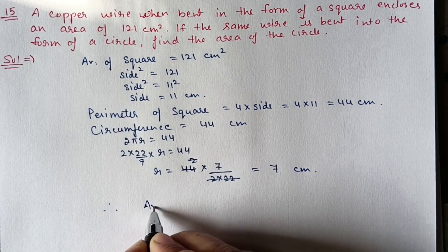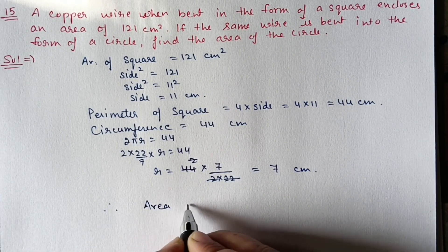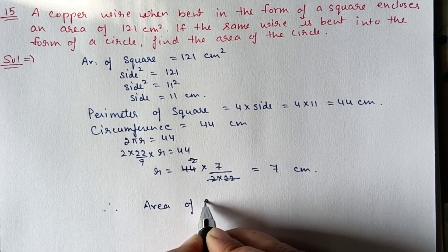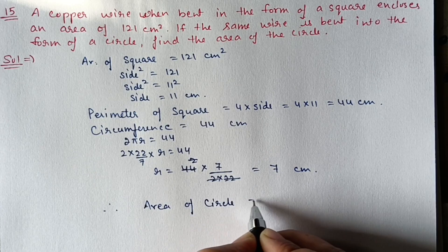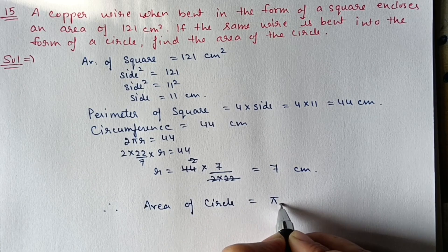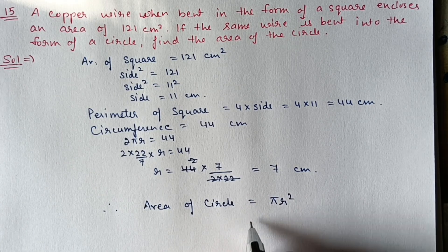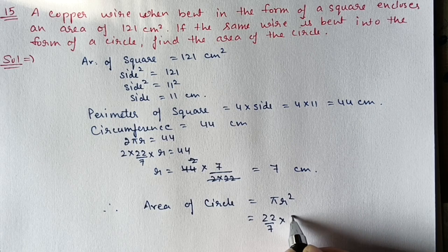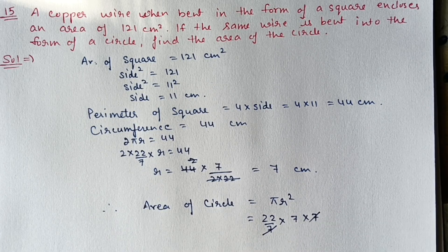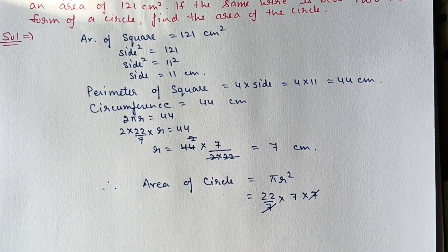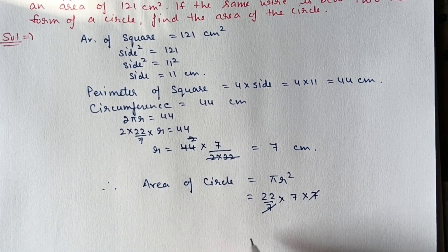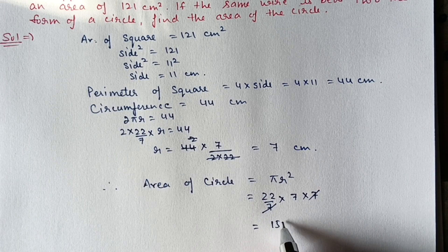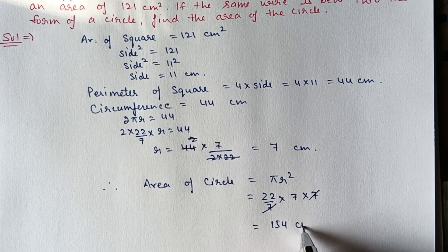Therefore area of circle = πr² = 22/7 × 7 × 7. The 7 cancels out, giving 22 × 7 = 154 centimeter square.